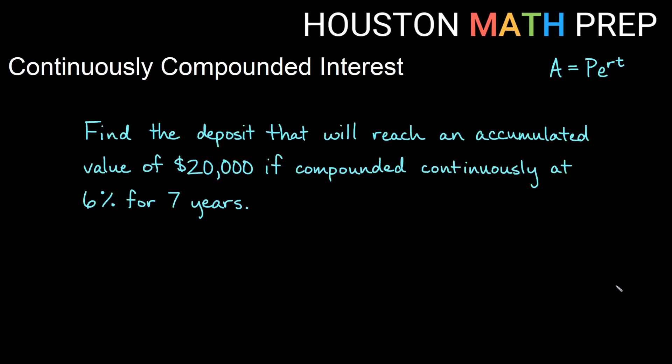Let's look at one that's just slightly different. This says, find the deposit. So we're finding actually P this time that will reach an accumulated value of $20,000. So my $20,000 is actually my A in the formula this time. Compounded continuously tells us that we're definitely using this formula. Our rate is 6%, so r in our formula will be 0.06. And our time is seven years given to us nicely in years. So t will just be seven simply there.